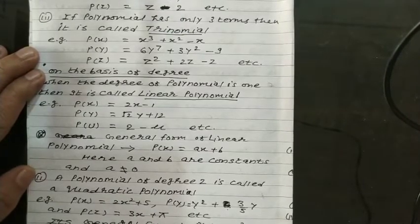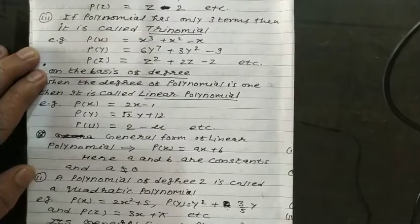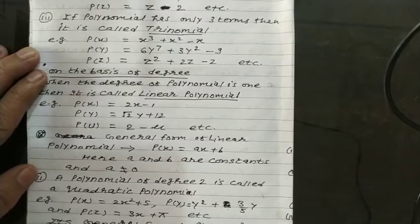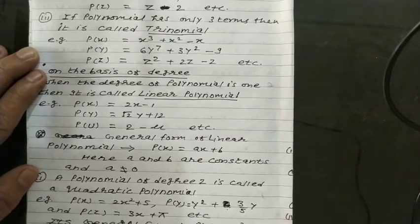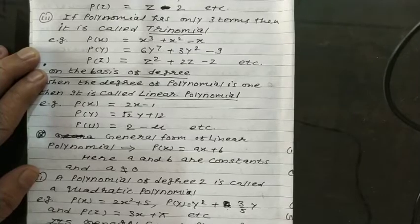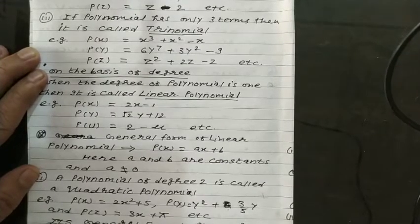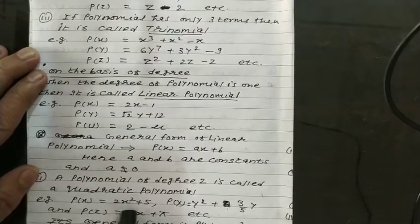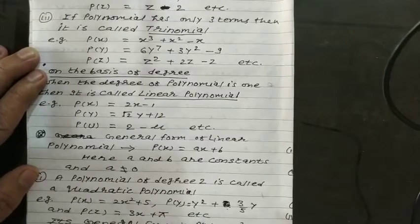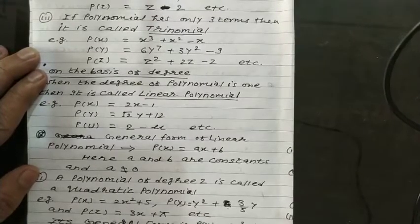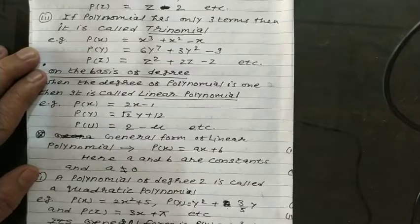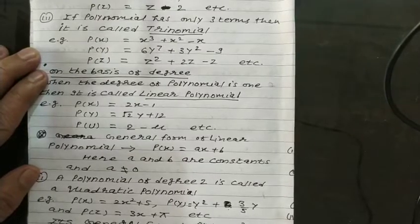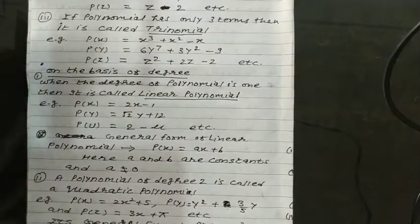A polynomial of degree 2 is called a quadratic polynomial. See in the examples, p(x) = x² + 5, p(y) = y² + 3/5. Here, the highest power is 2. This is called degree 2.